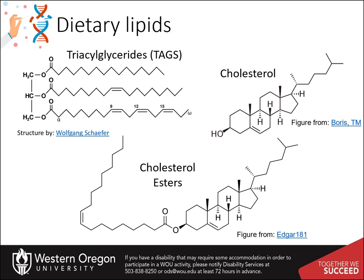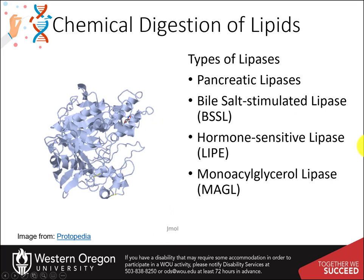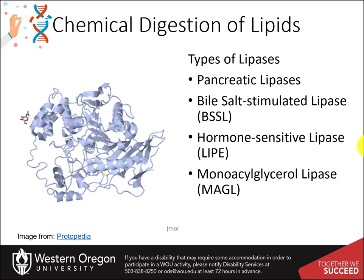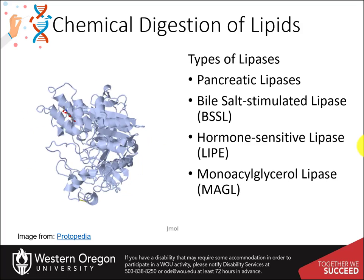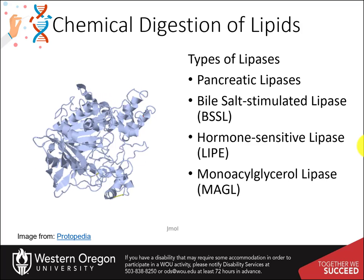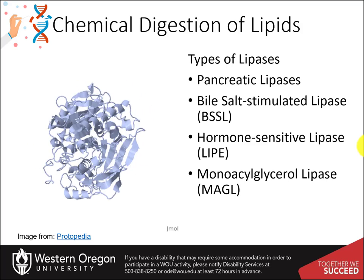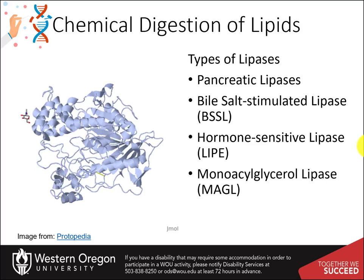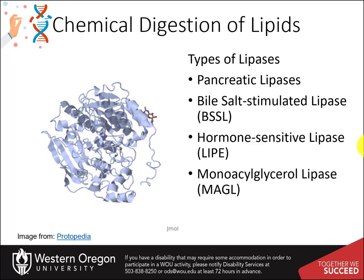The primary lipids consumed in the diet are triacylglycerides, cholesterol, and cholesterol esters, which contain long-chain fatty acids attached to the alcohol functional group. Lipase enzymes are required to chemically break down triacylglycerides into fatty acids and glycerol. They are hydrolase enzymes using the addition of water across the ester bond to release the alcohol and carboxylic acid functional groups.